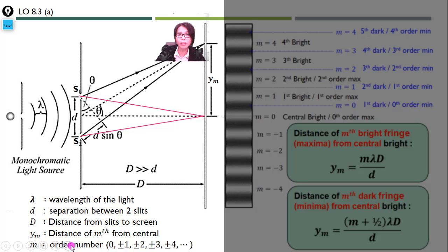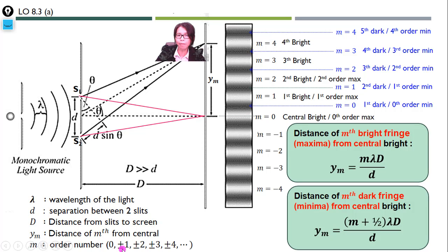M refers to the order number. Bear in mind, the order number always starts from 0, followed by plus or minus 1, plus or minus 2, and so forth. We have plus or minus because the interference pattern forms on either side of the central bright.